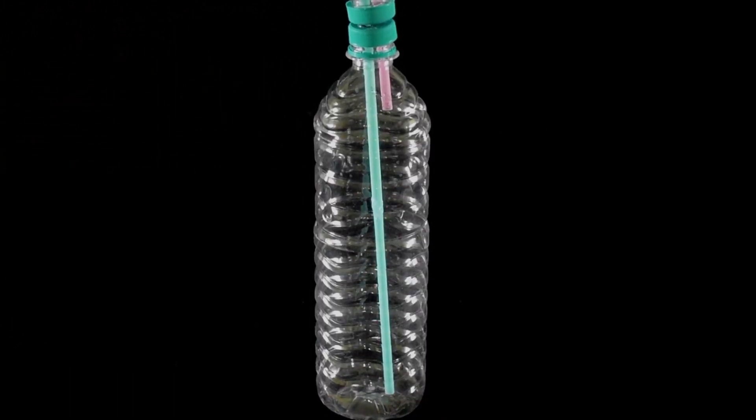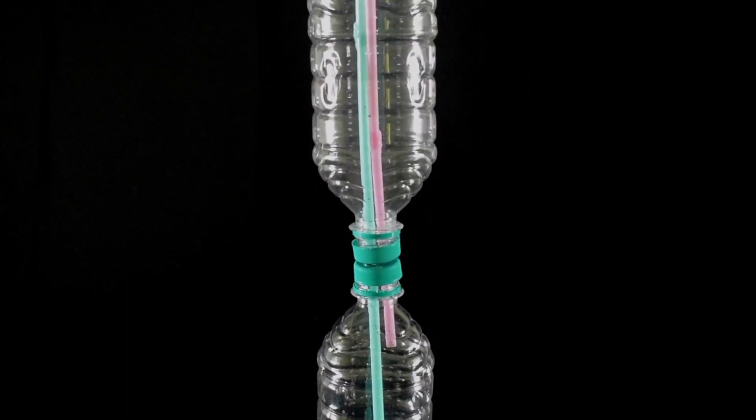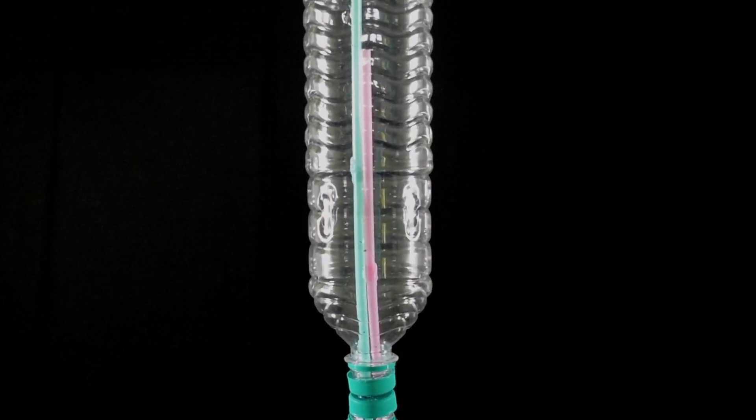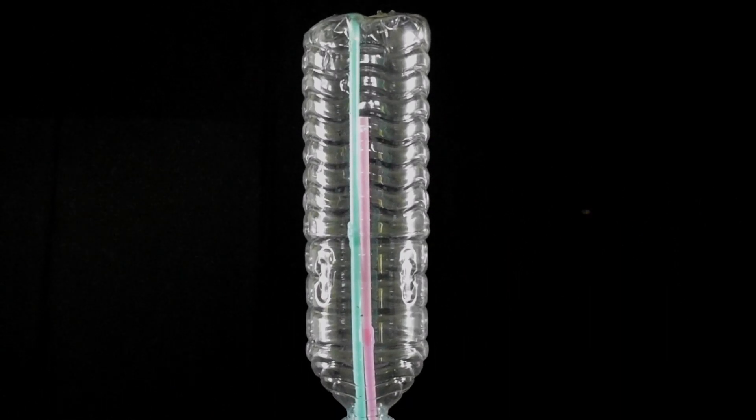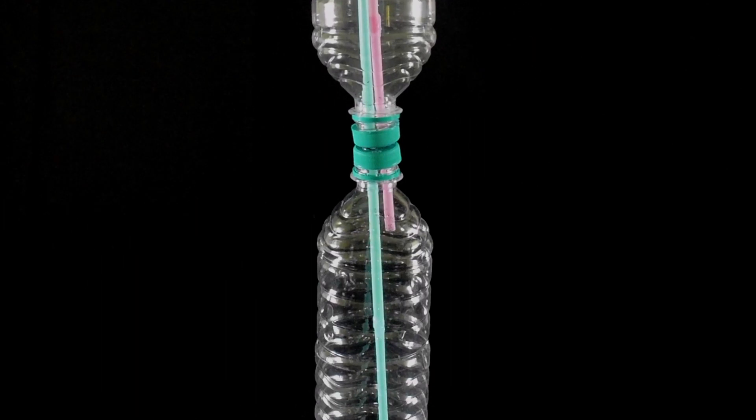Connect two bottles together using the double bottle top we made. The green straw should run from the bottom of the bottom bottle up and through the hole at the top of the top bottle. The pink straw should be a couple of inches down both bottles like this.